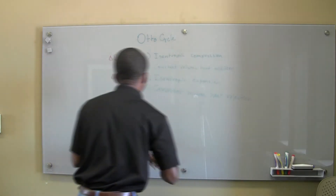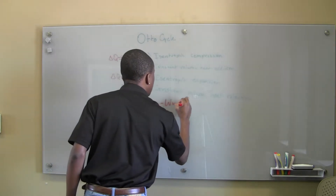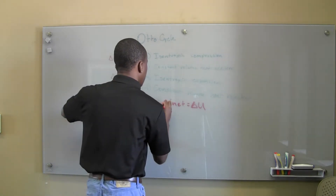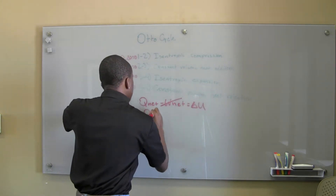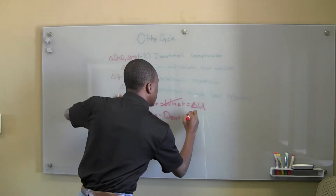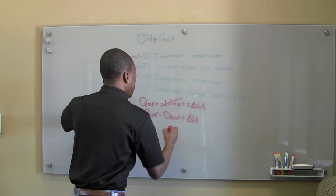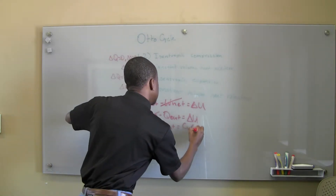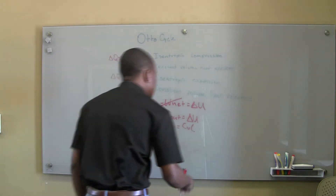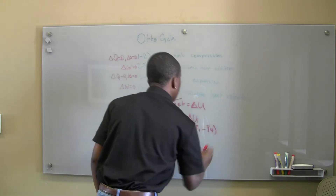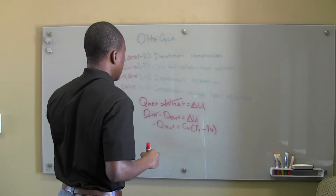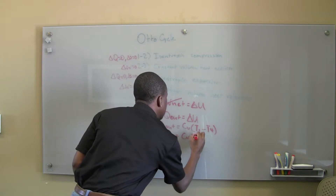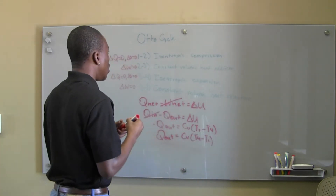For the fourth process, Q_net minus W_net equals delta U. For constant volume heat rejection, work is zero. Q_net gives us Q_in minus Q_out, and since it's heat rejection, we get negative Q_out equals c_v(T1 - T4). Flipping this, Q_out equals c_v(T4 - T1). Those are basically the four process equations you need — you should be able to work them out from logic rather than memorizing them.